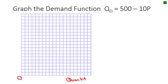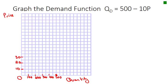Let's graph that demand function. Quantity is on the x-axis, price is on the y-axis. When p = 0, quantity = 500, so we mark 100, 200, 300, 400, 500 on the quantity axis. When quantity = 0, price = 50, so we mark 10, 20, 30, 40, 50 on the price axis. You would draw a straight line connecting those two points using a ruler, and label the graph QD = 500 - 10p.